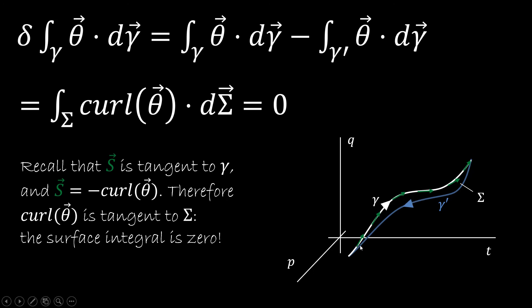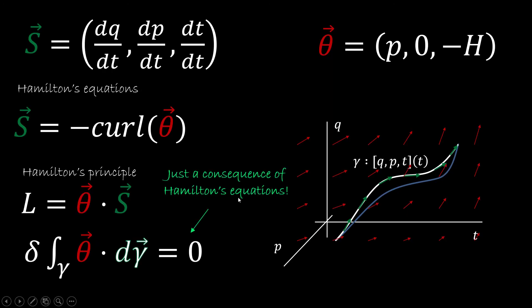then the surface integral has to be zero. So then we have the line integral on gamma is going to be equal to the line integral that we do on gamma prime. The line integral is stationary.